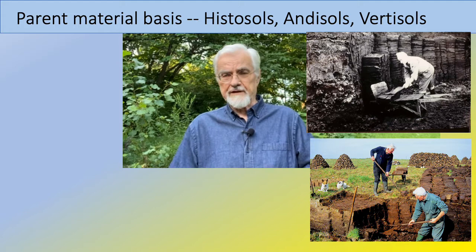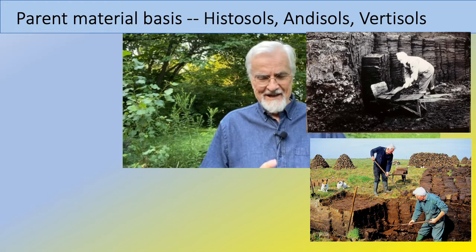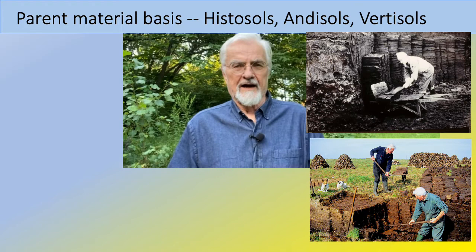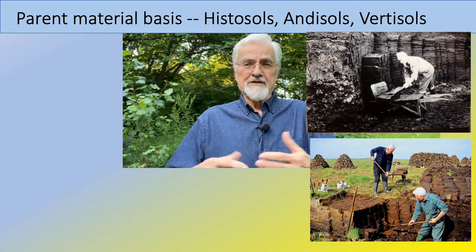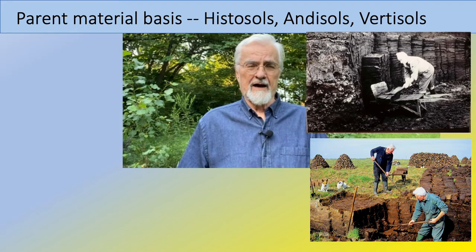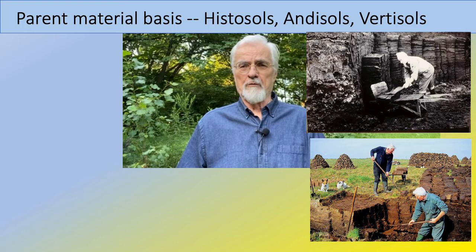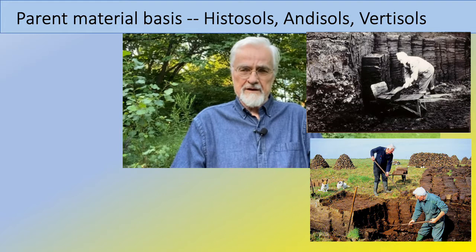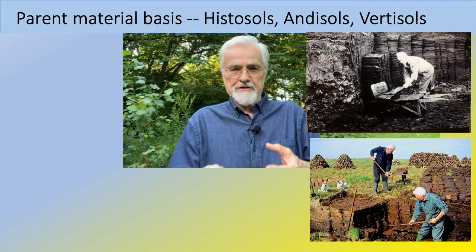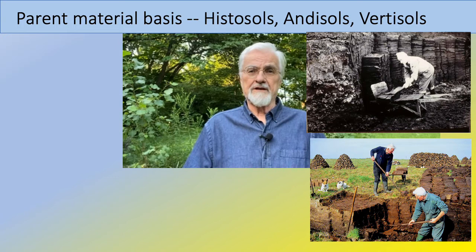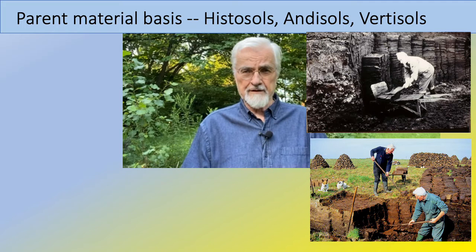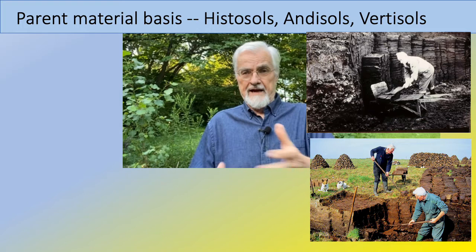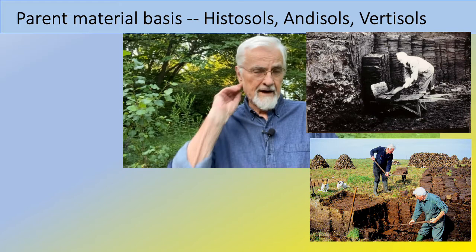The three soil types based on parent material are histosols, andosols, and vertisols. Histosols — 'histo' refers to tissue — are soils based on dead tissue, filled with organic matter. A classic example is in Ireland, where people traditionally harvest histosols as peat, carved into bricks, dried, and used as fuel for heating and cooking, and also as fertilizer in agriculture.